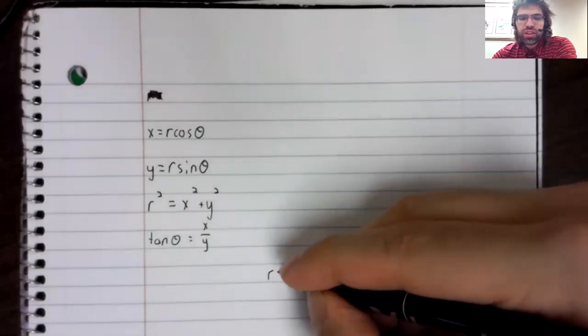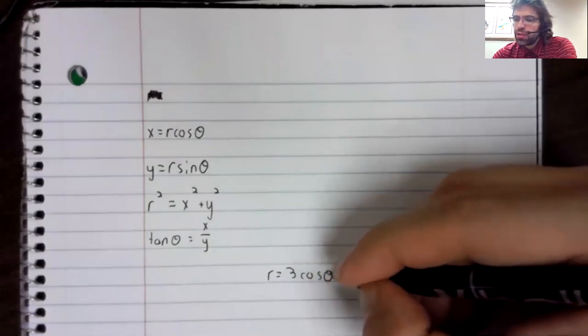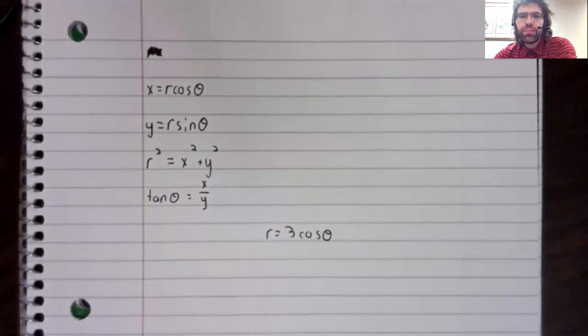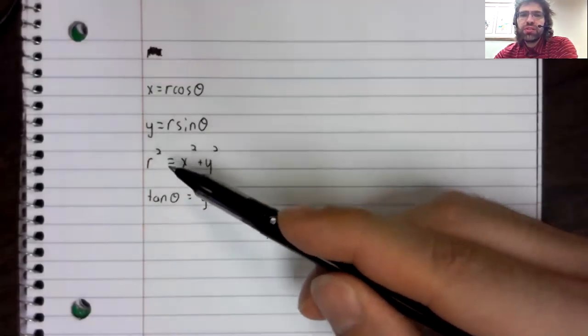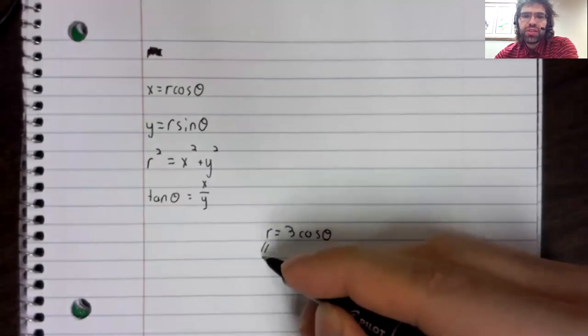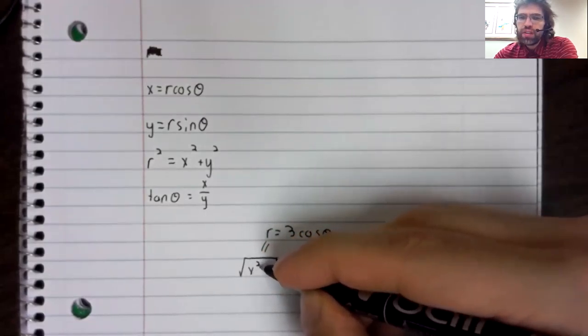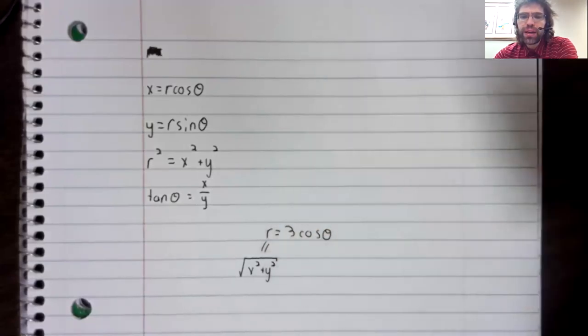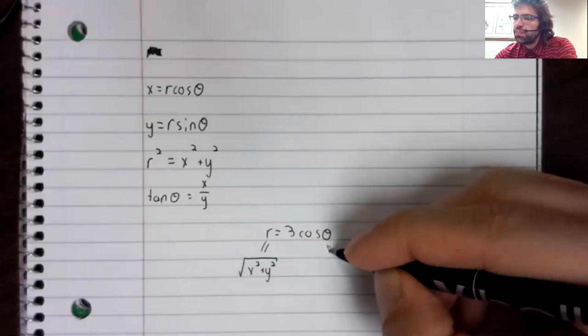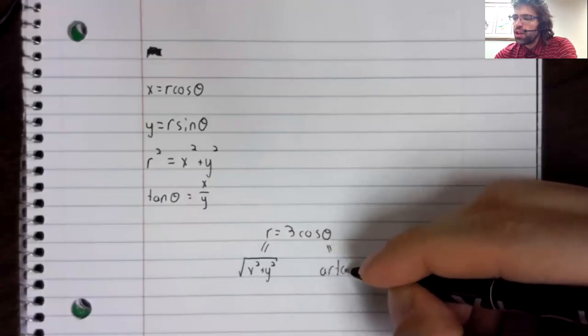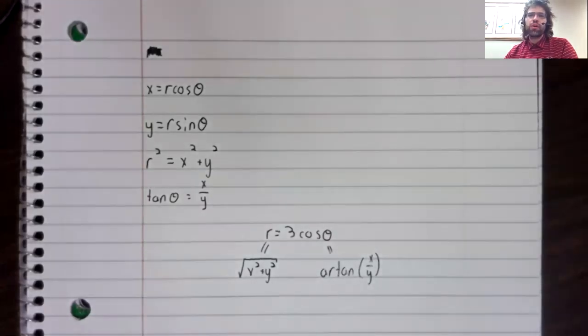For example, say we have r equals three times the cosine of theta. Maybe we have the following idea. Because of this equality, we'll replace r with the square root of x squared plus y squared. And because of this equality, we'll replace theta with the arc tangent of x over y.